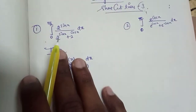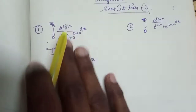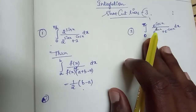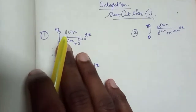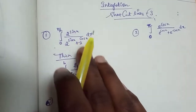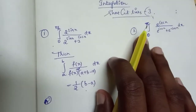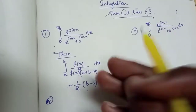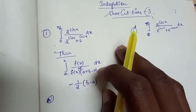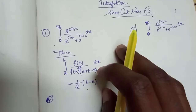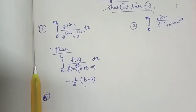So here is a series problem: from 0 to pi by 2, find the integral of 2 power of sin x divided by 2 power of sin x plus 2 power of cos x, dx. We need to find this out — this is a problem many juniors find challenging.